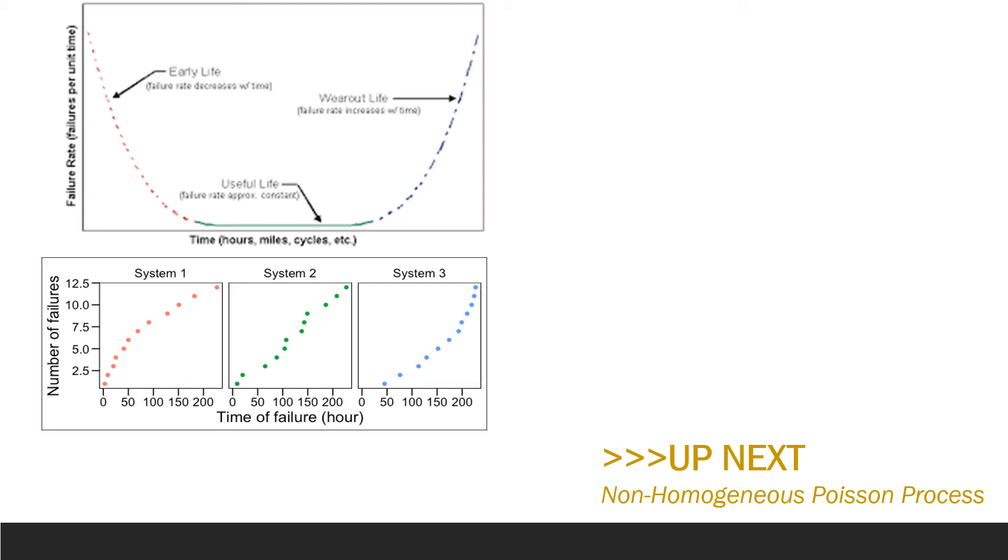System 2 has a failure rate that is constant and we can see this in the basically linear relationship between the number of failures and the time of failure on the x-axis. And this correlates to this useful life period here where we're seeing that as time goes on the number of failures has some linear-ish slope.